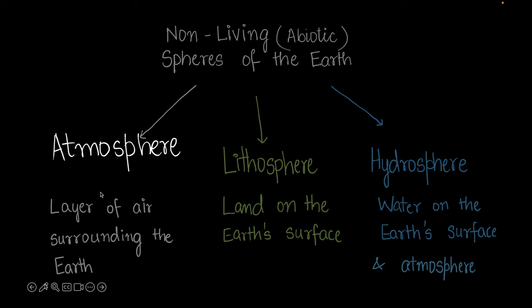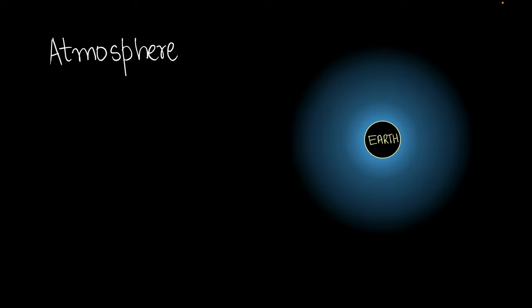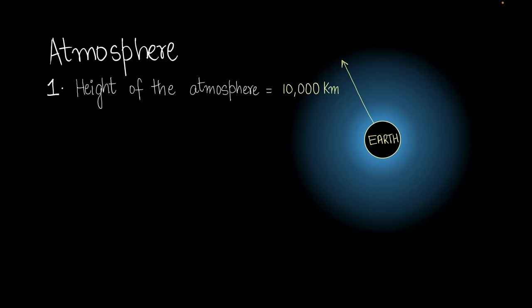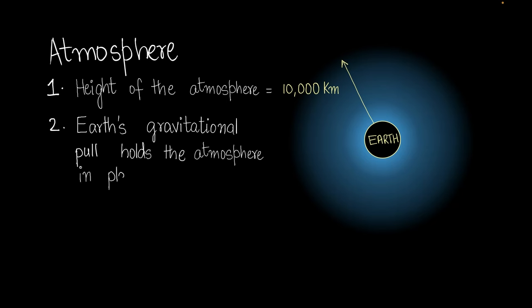In this video we'll be focusing on the atmosphere and the air. Here's the earth and here's the atmosphere around the earth. The height of the atmosphere is 10,000 kilometers. The earth's gravitational pull holds the atmosphere in place and keeps it from moving away into space.